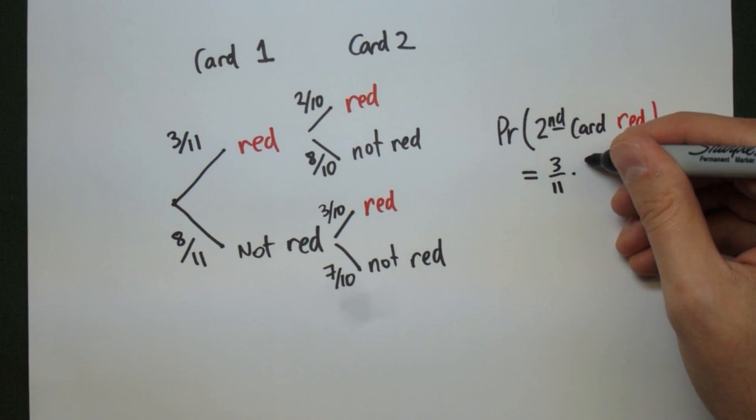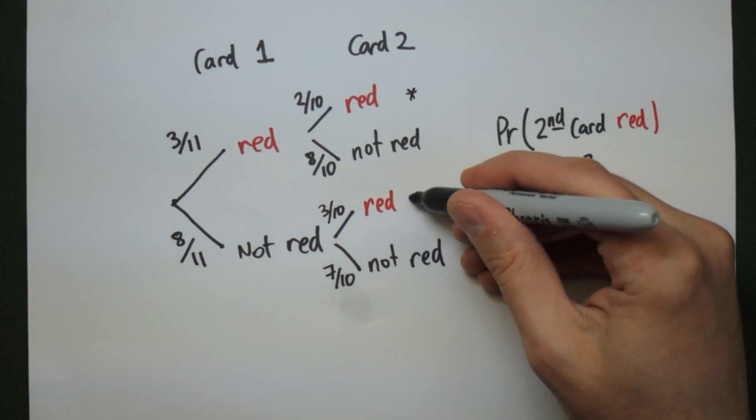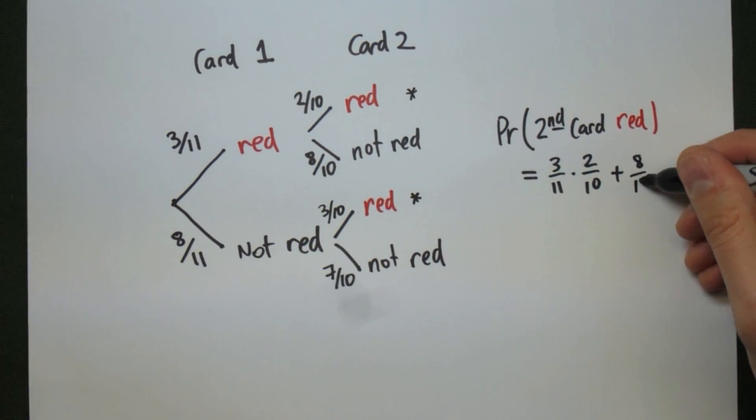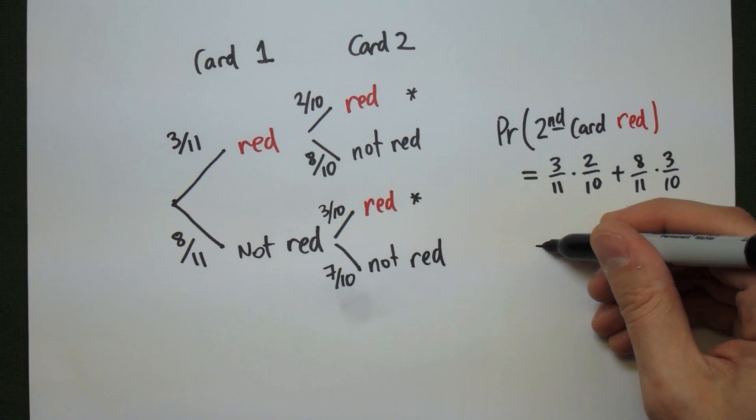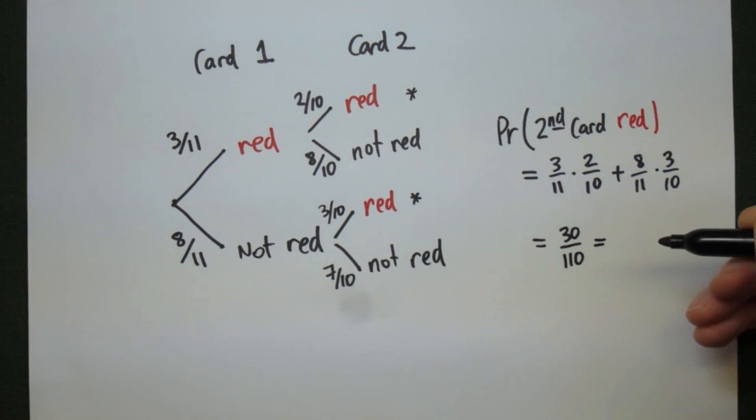The first branch is three-elevenths times two-tenths by the multiplication principle, and the second branch is going to be eight-elevenths times three-tenths. So we multiply these, and then we add, and we end up with our result, which is going to be thirty out of a hundred and ten, or three-elevenths.